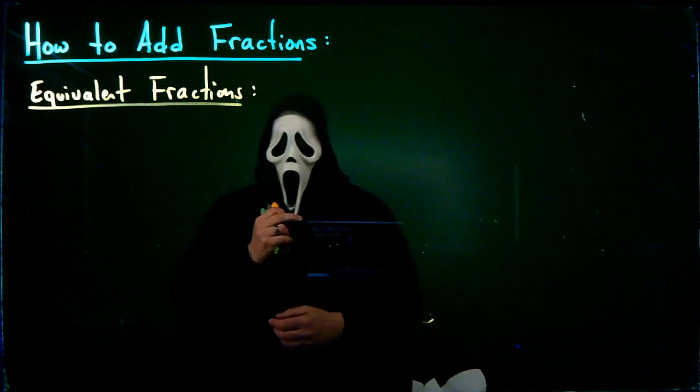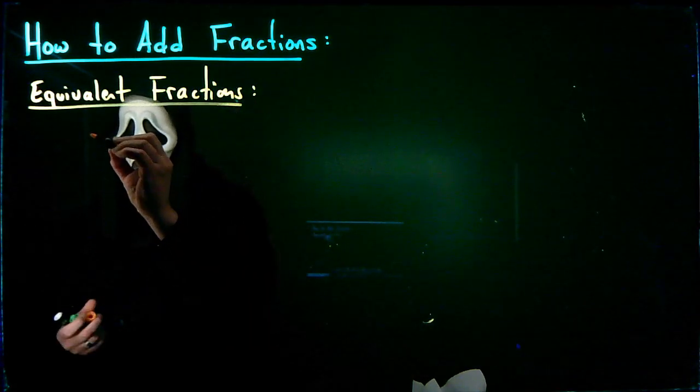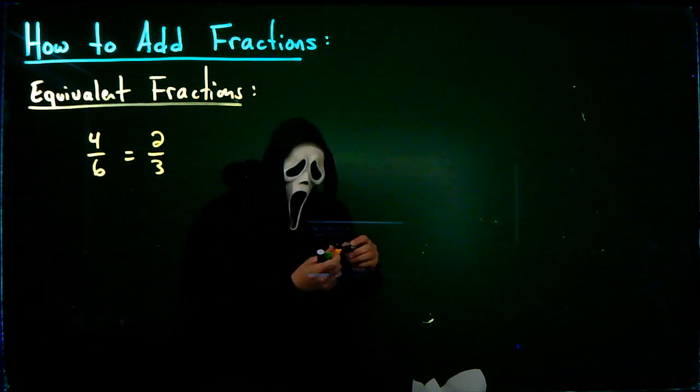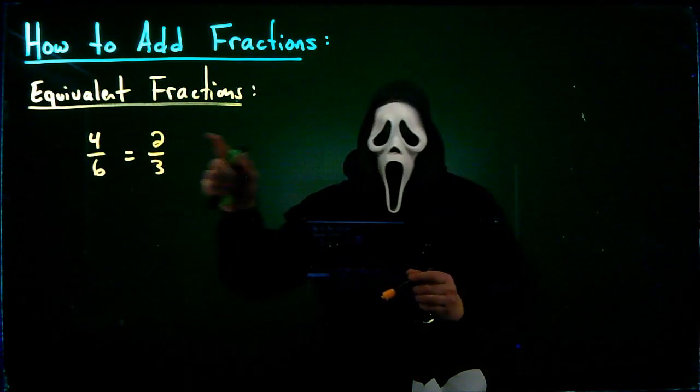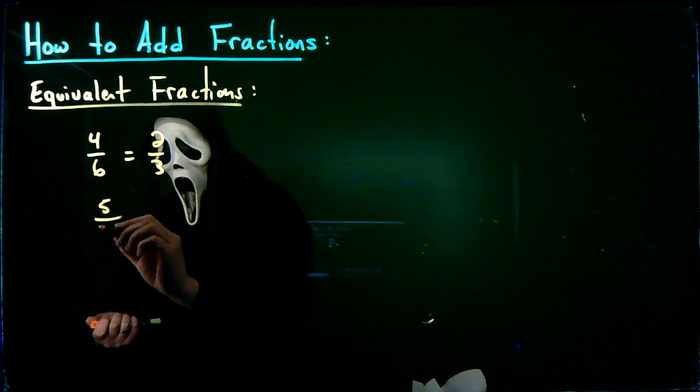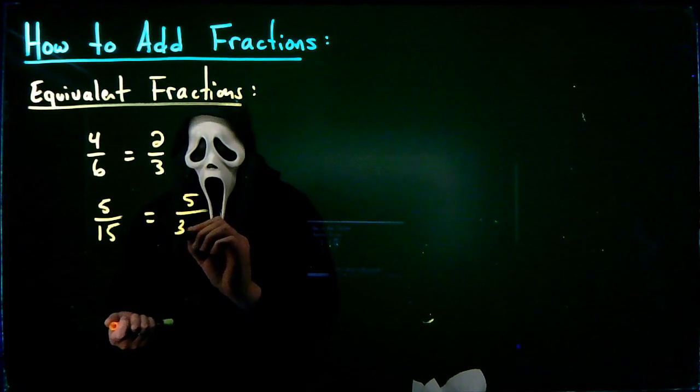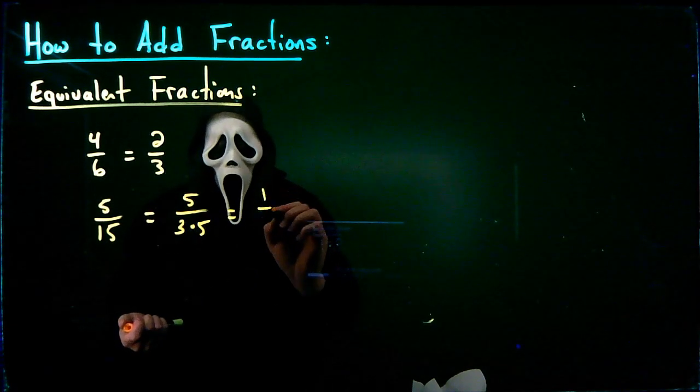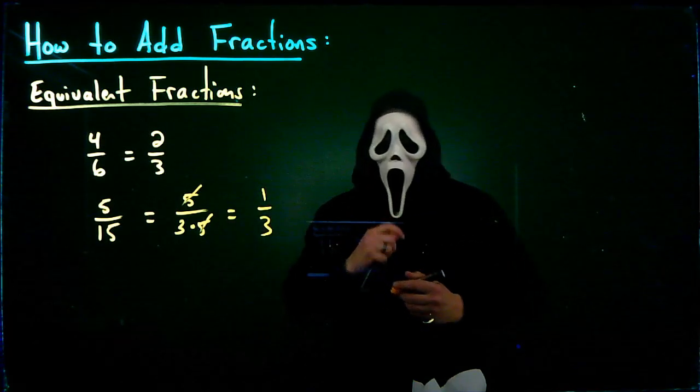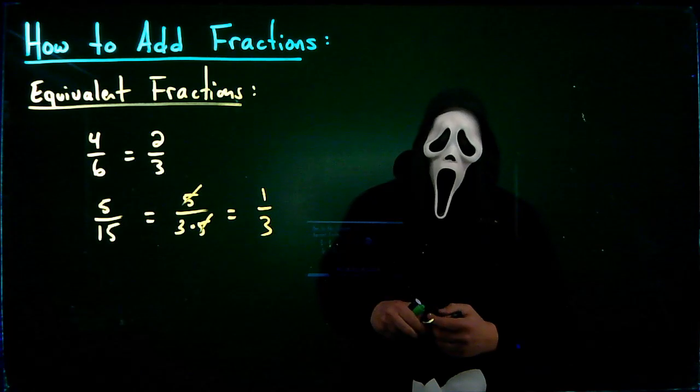Now let's talk about equivalent fractions. As I mentioned in the previous example, 4 sixths is equal to 2 thirds. So those are equivalent fractions because the one reduces to the other. Similarly, if I give you 5 fifteenths, we can factor the 15 to get 3 and 5, and therefore 5 fifteenths is equivalent to 1 third. So those are equivalent fractions.